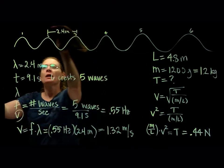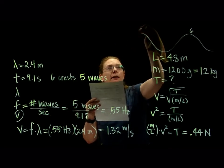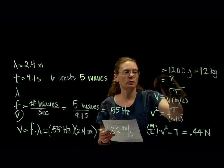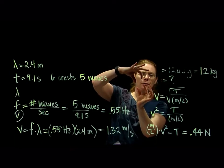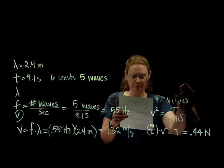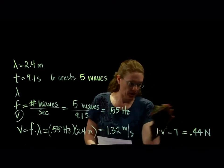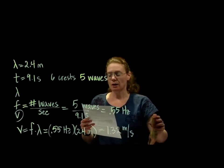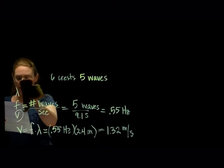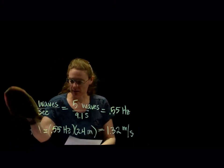Let's do the second problem. You attach your slinky to a nail in the wall. The mass of the slinky is 30 grams. With a spring scale, you pull the other end of the slinky until it stretches to 1.15 meters. When pulled to that distance, the scale measures 8.8 newtons. What is the speed of waves on the slinky? Second, if you pluck the slinky, how long does it take that wave pulse to reach the other end? Third, if you set up a wave with a wavelength of 0.85 meters, what is the frequency?